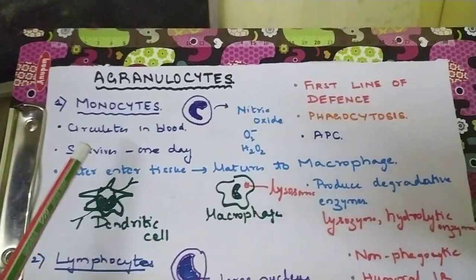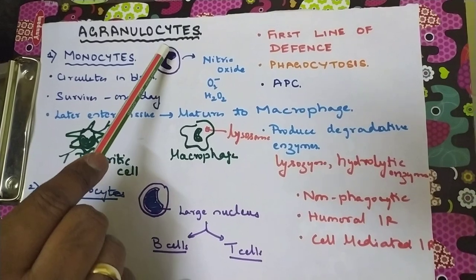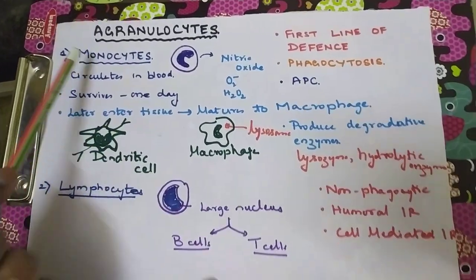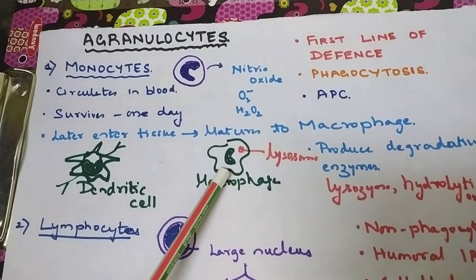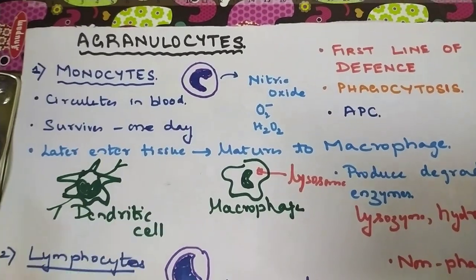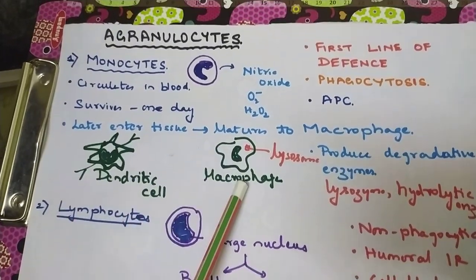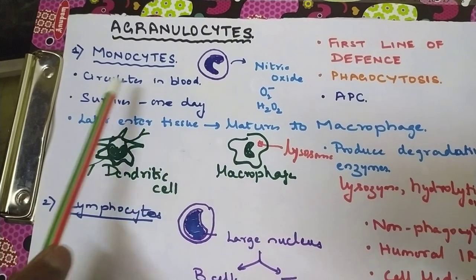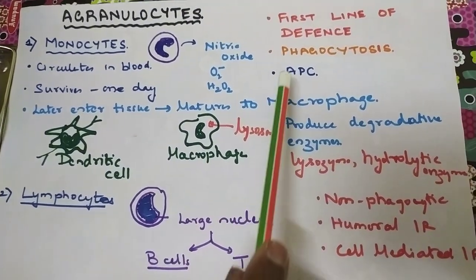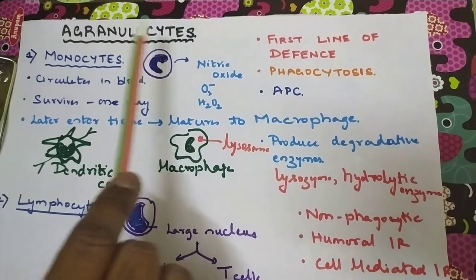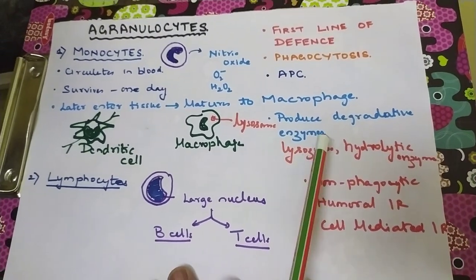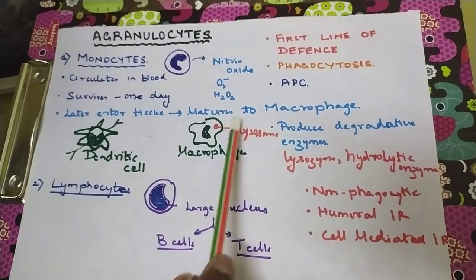For agranulocytes, monocytes have an almost kidney-shaped nucleus and no granules. Monocytes give rise to macrophages and dendritic cells. Dendritic cells are found in skin and organs. Both dendritic cells and macrophages can act as antigen-presenting cells. Monocytes circulate in the blood and survive for about a day before entering tissue and maturing into macrophages. Monocytes are a first line of defense, helping in phagocytosis and acting as antigen-presenting cells. They produce degradative enzymes like lysozymes and hydrolytic enzymes, presented in the form of lysosomes.